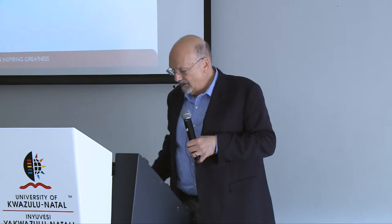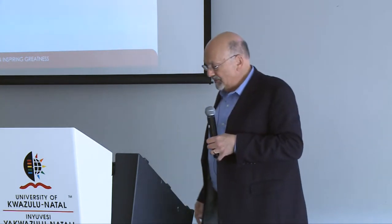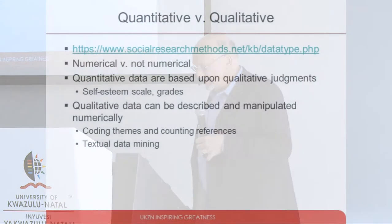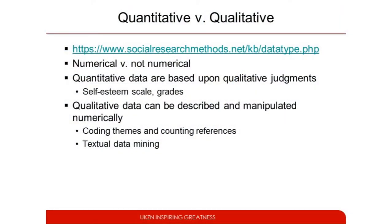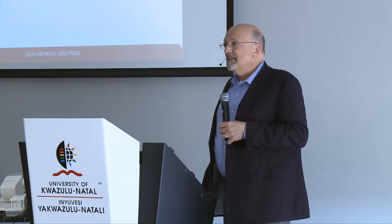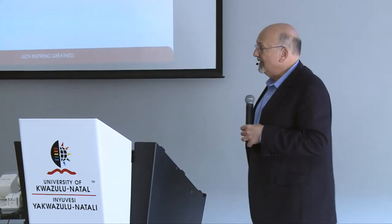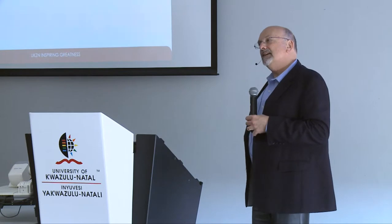For our work, we're going to focus more on those social science distinctions like quantitative versus qualitative. The big distinction — quantitative versus qualitative — is really numerical versus not numerical. But even though they're distinguished as different, quantitative data are based on qualitative judgments — things like self-esteem scales, or grades, which are based on a faculty member's judgment of exams and assessments.